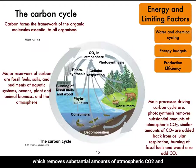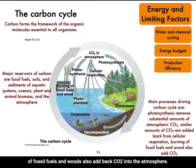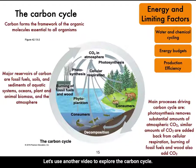The main processes driving the carbon cycle are photosynthesis, which removes substantial amounts of atmospheric CO2, and similar amounts of CO2 are added back through cellular respiration — the opposite of photosynthesis. The burning of fossil fuels and wood also adds CO2 back into the atmosphere. Let's use another video to explore the carbon cycle.